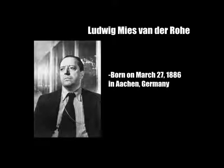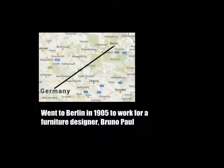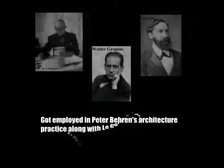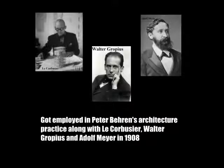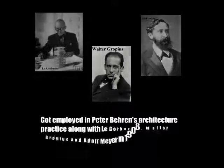Ludwig Mies van der Rohe was born as Maria Ludwig Michael Mies on March 27, 1886 in Aachen, Germany. He went to Berlin in 1905 at the age of 19 to work for furniture designer Bruno Paul, and got employed later on in Peter Behrens' architecture practice along with Le Corbusier, Walter Gropius and Adolf Mayer in 1908.